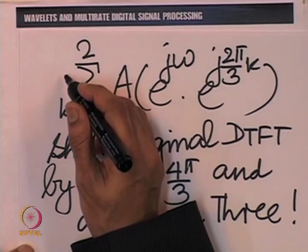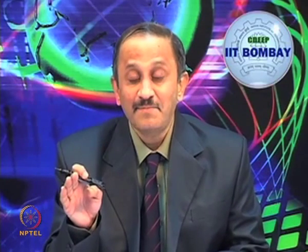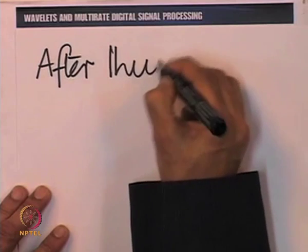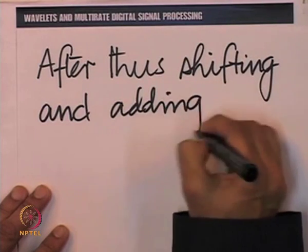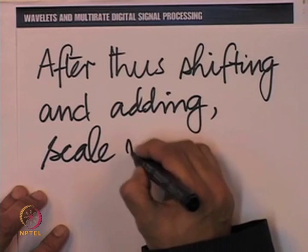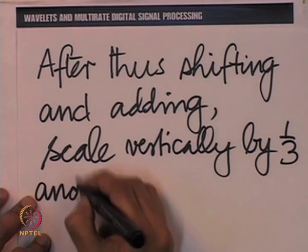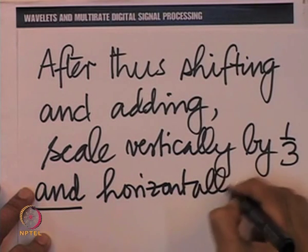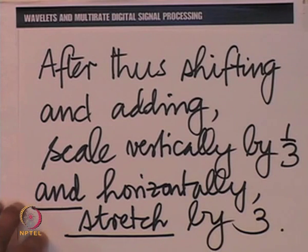Multiplication by 1/3 is a minor issue — it only means scaling the spectrum by a factor of 1/3. The last step is to replace ω by ω/3, which is an expansion step: after the shifting and adding, the spectrum is scaled vertically by 1/3 and stretched horizontally by a factor of 3. That completes the frequency-domain effect of down-sampling by 3.